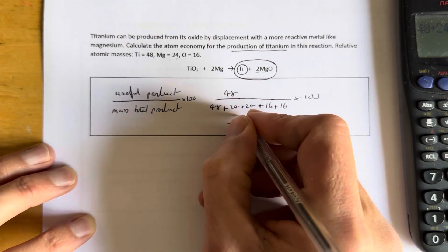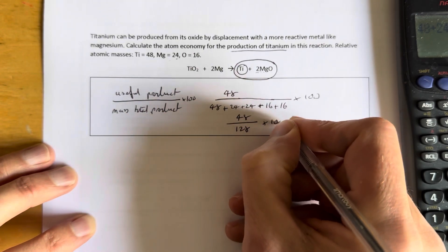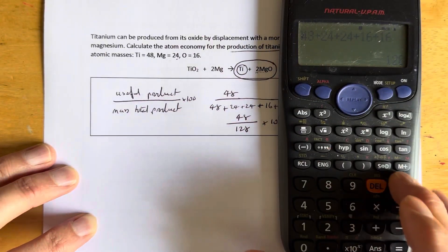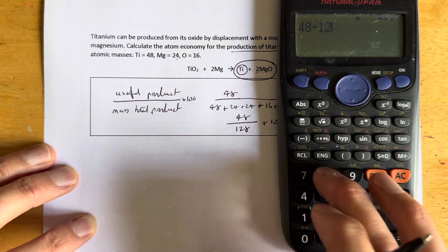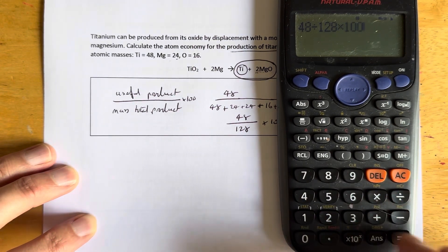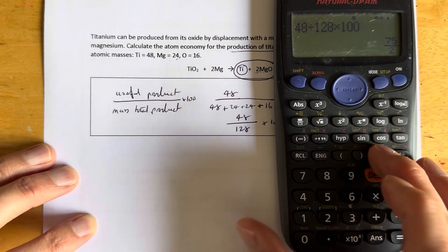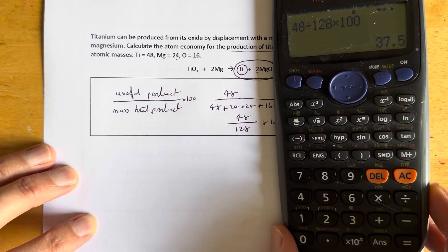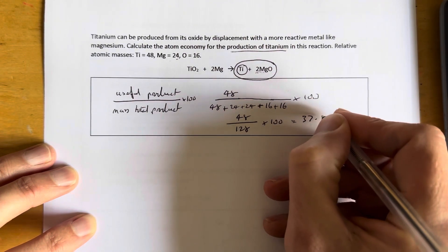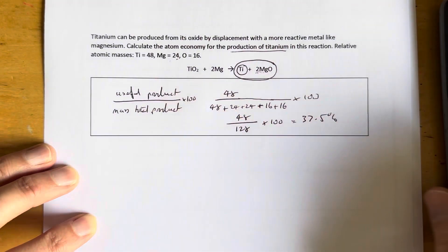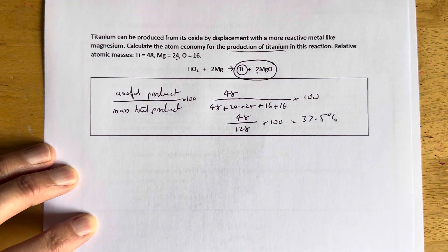So it's 48 divided by 128 multiplied by 100. 48 divided by 128 multiplied by 100 equals that looks like 37 and a half percent. So the atom economy for this reaction is 37.5 percent. All these questions and more on elshamhighchemistry.com